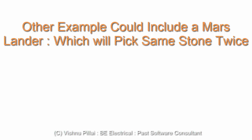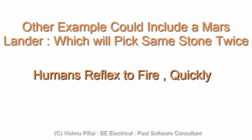Another example is a Mars lander. If a Mars lander picks up a sample of some stone, and after some days or hours it comes across the same sample again, a more advanced agent could ignore that sample based on prior experience. But a simple reflex agent would just pick it up again, ignoring its previous perceptive history.